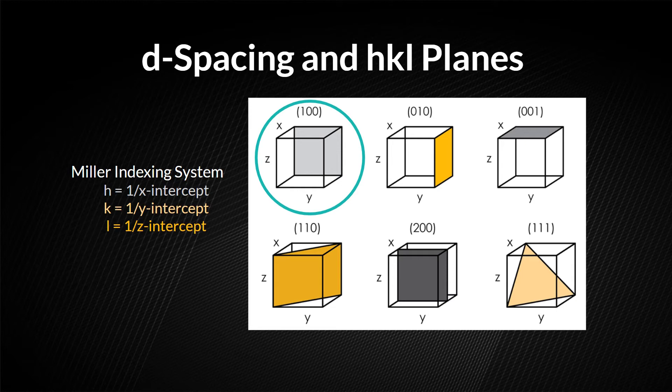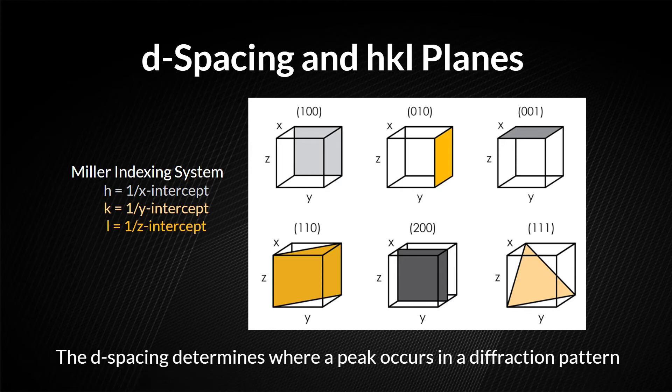The 110 refers to a plane that is diagonal inside the cube. Each HKL describes a family of parallel planes with interplanar distance D. This D-spacing determines where a peak will occur in a diffraction pattern.